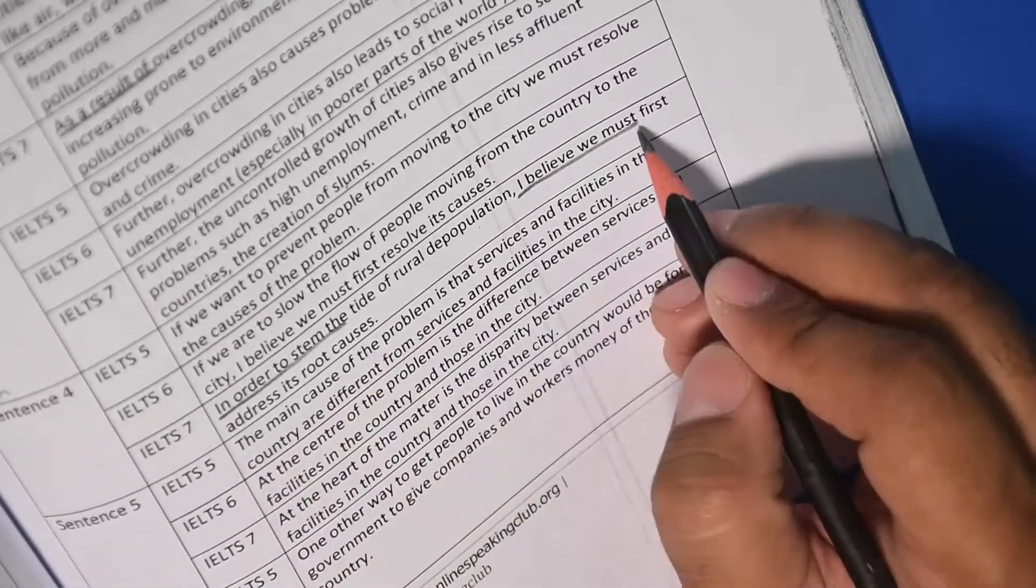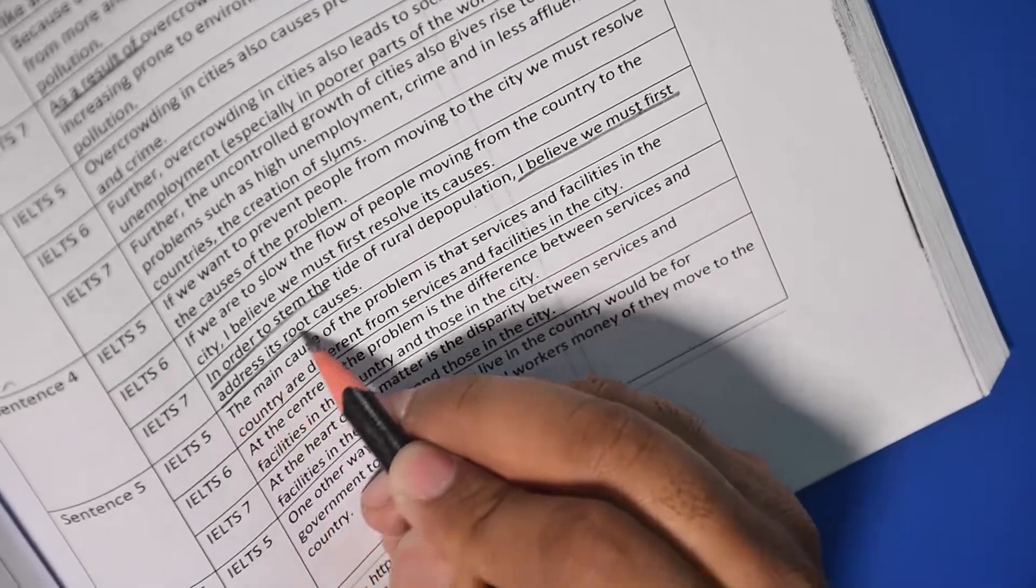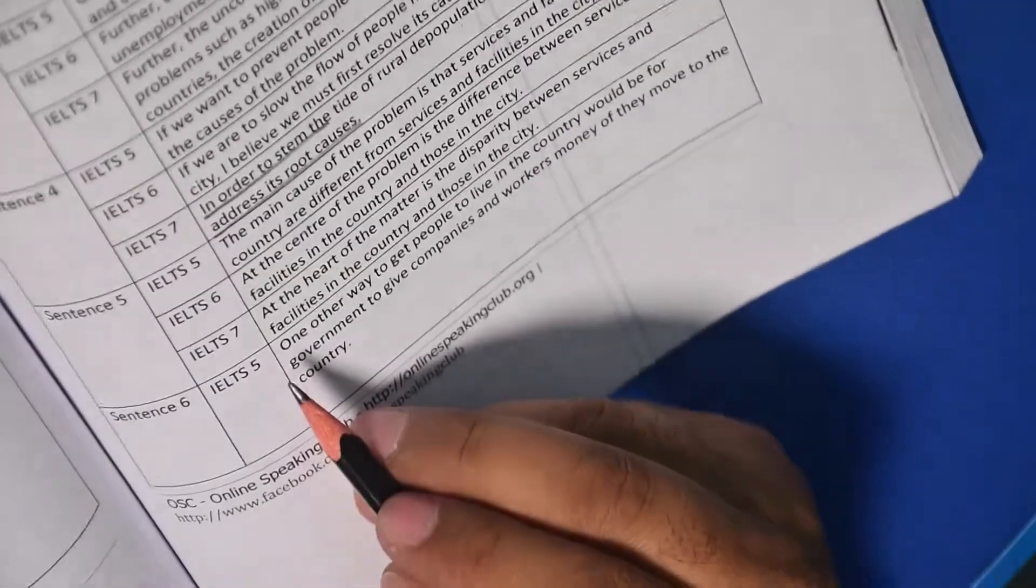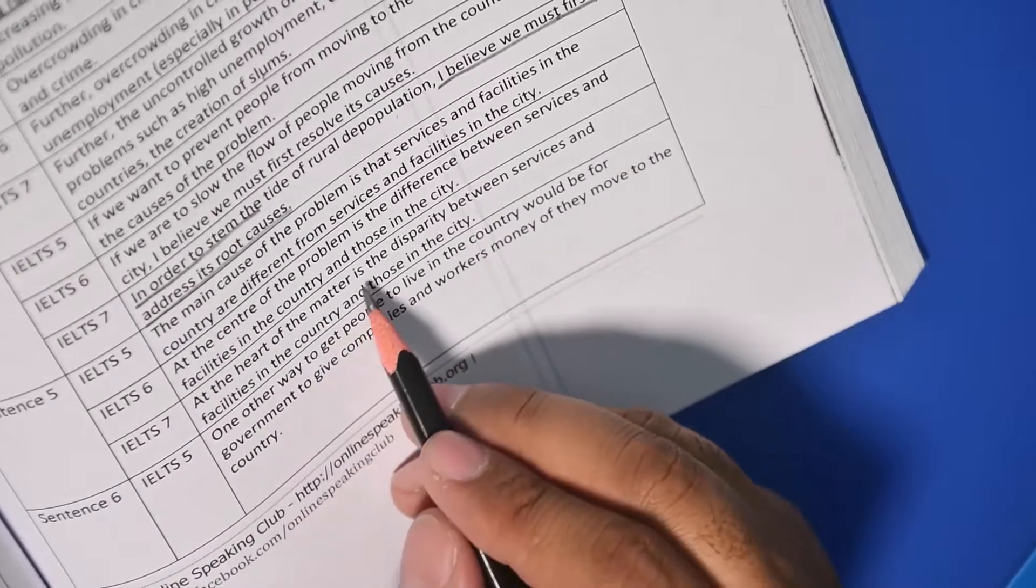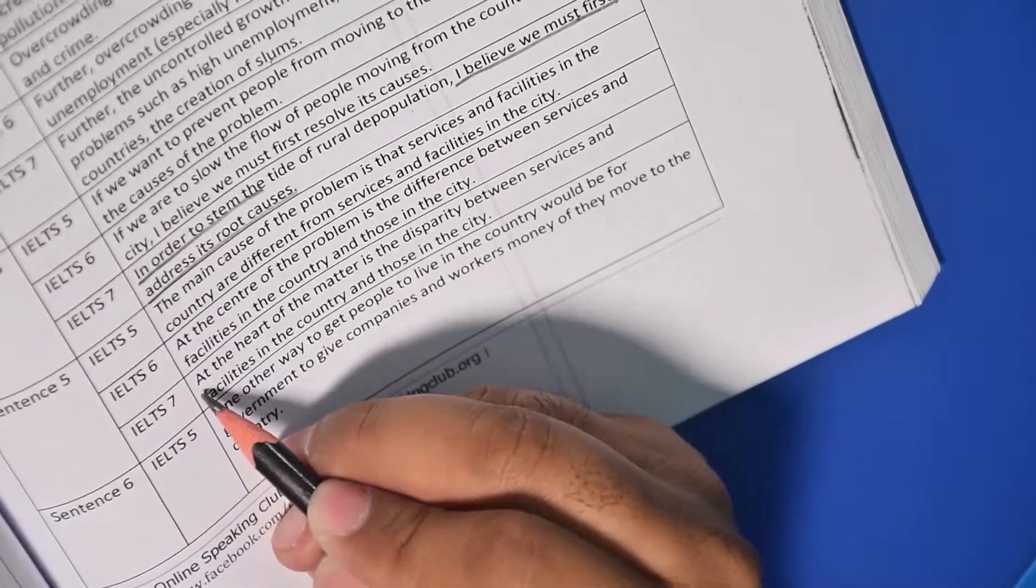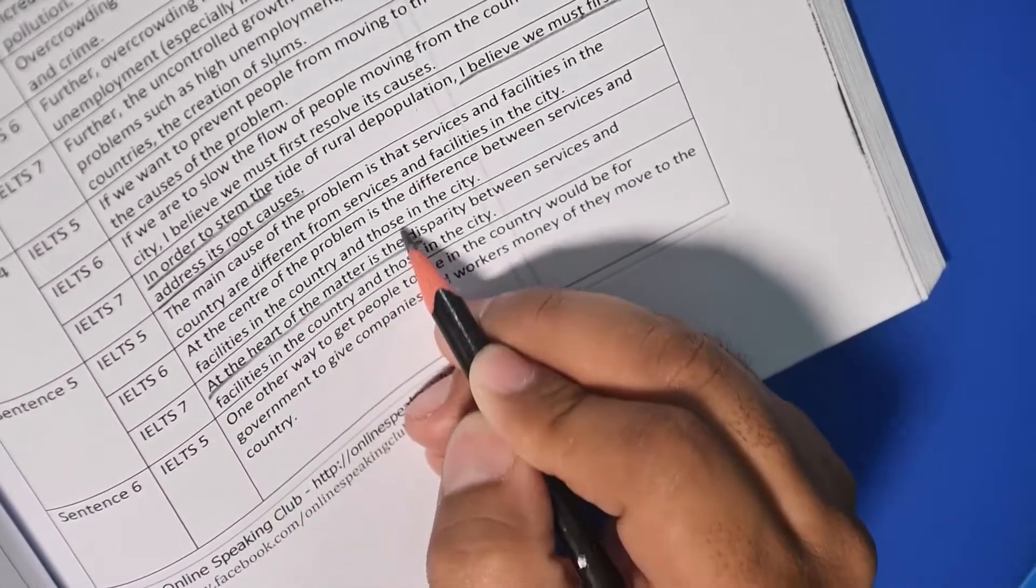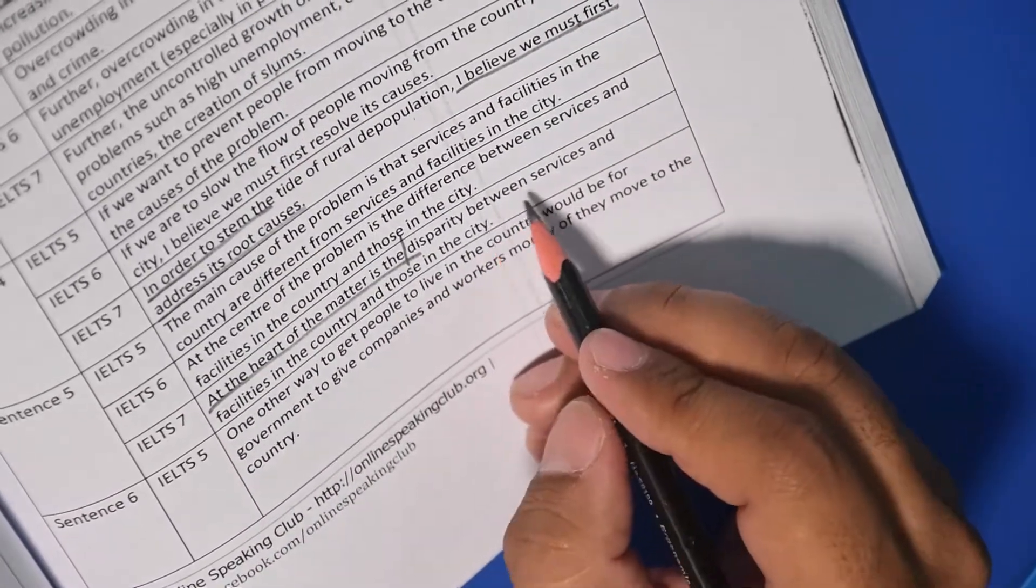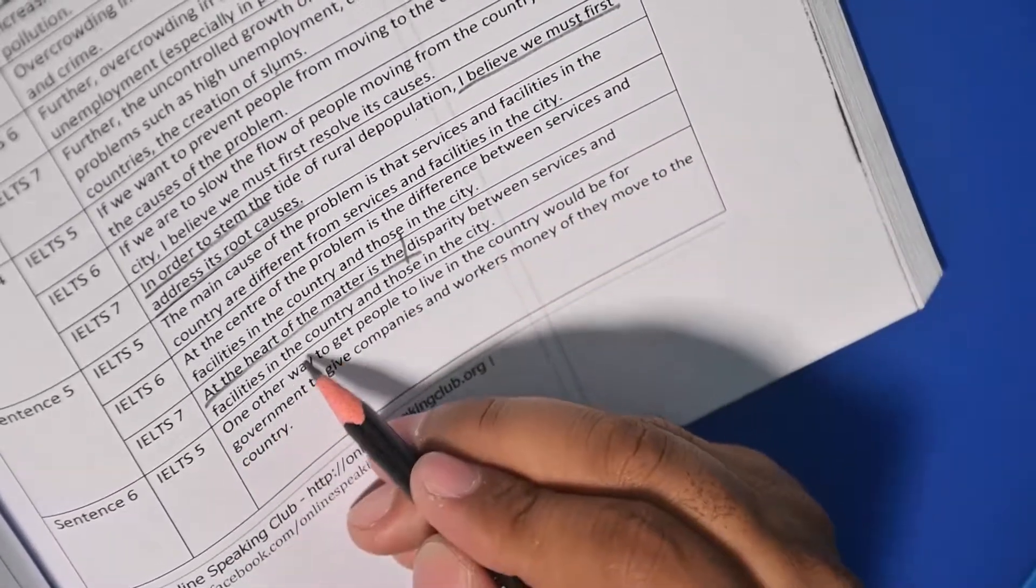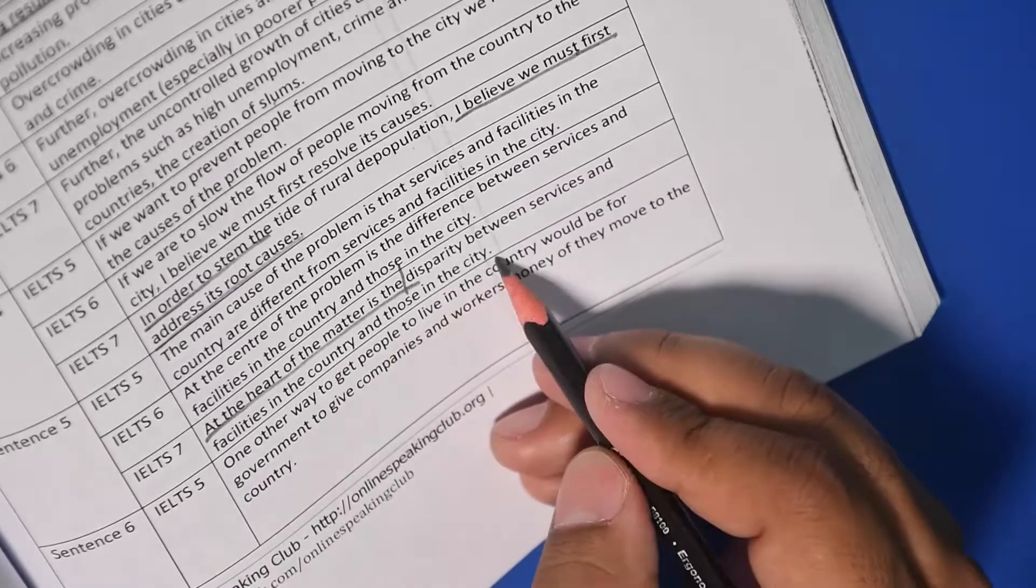First address its root causes, you can write it as is. Next, at the heart of the matter is the, you can write this phrase. At the heart of the matter is the, and then whatever topic, disparity between services and facilities in the country and those in the city.